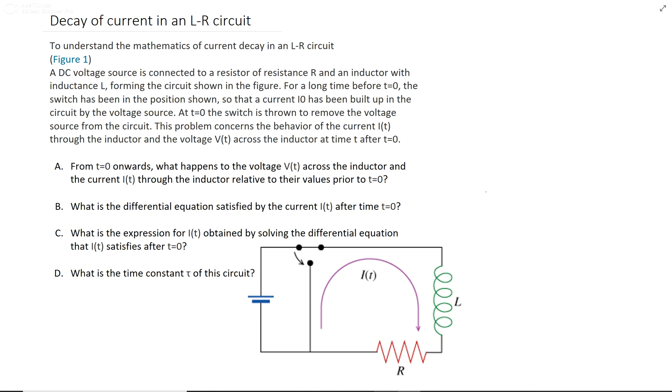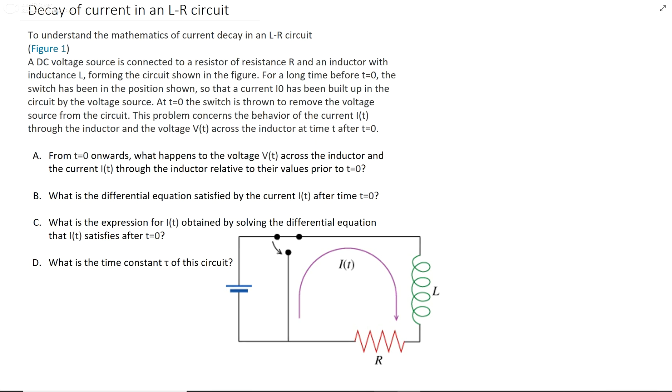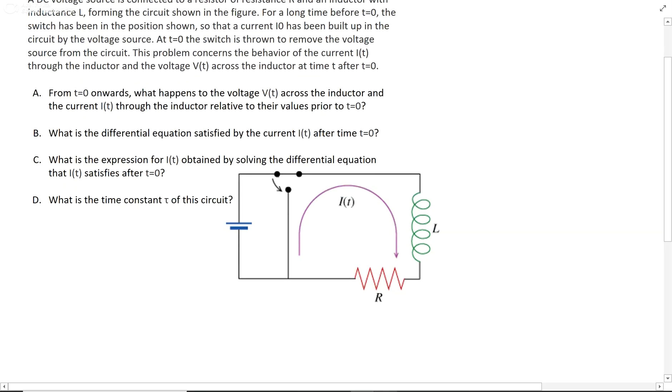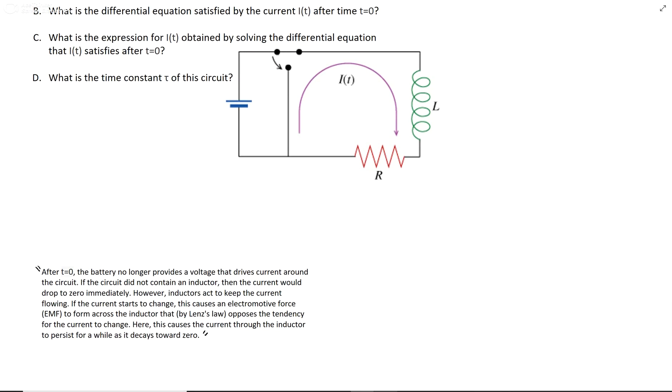The first question asks what happens to the voltage across the inductor and the current through the inductor relative to the values prior to t equals 0. So like we just said, at t equals 0 they throw the switch, so the voltage changes very abruptly. Now the current is going to change much slower.